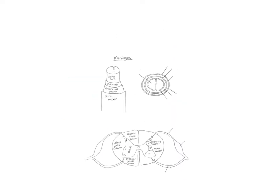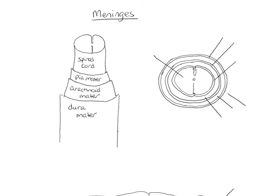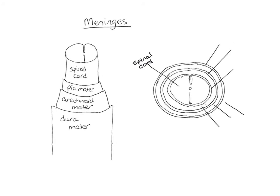The meninges are the protective covering surrounding the spinal cord. We have spinal meninges and cranial meninges, and they are continuous with each other. The spinal meninges go up around the spine and at the foramen magnum they become the cranial meninges, which have a slightly different structure in the brain. We're going to focus on the spinal meninges today, and there are three layers — this is on your lab exam too.